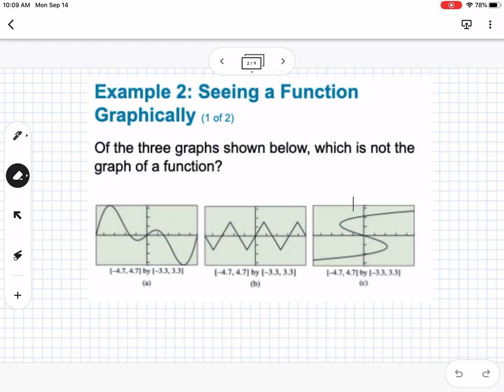Okay, so the first example is seeing a function graphically. Of the three graphs shown below, which is not a graph of a function? So if you remember, we use the vertical line test to determine if something is a function. So if we look, the first graph is yes, it's a function. The second graph is yes, it's a function. The third graph, if I were to pass a vertical line through it right there, it would cross in three spots, so therefore it is not a function.